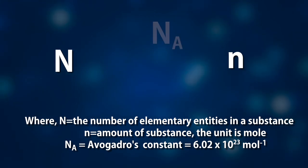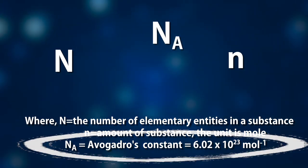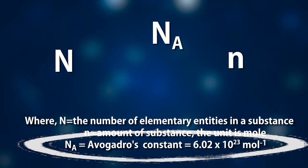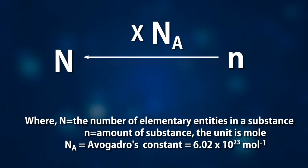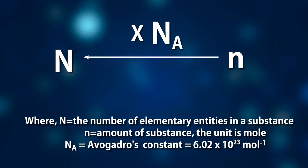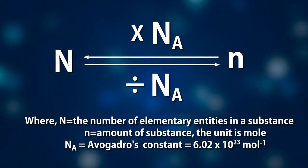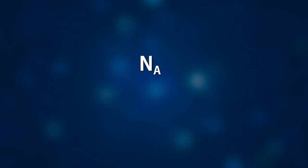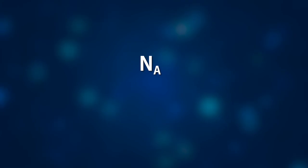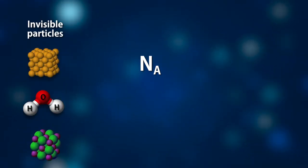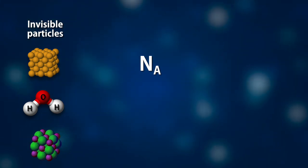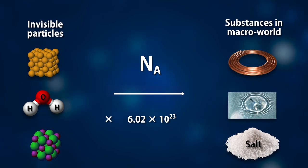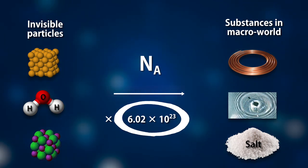The relationship between the number of particles and Avogadro's constant: one mole of any substance contains about 6.02 times 10 to the 23rd elementary entities. To find the number of particles N in a substance, we multiply the amount of substance by Avogadro's constant. Conversely, to find the amount of substance in moles, we divide the number of particles N by Avogadro's constant. So Avogadro's constant Nₐ is a conversion factor transferring the number of invisible particles at the molecular and atomic level to the amount of substance we can observe.